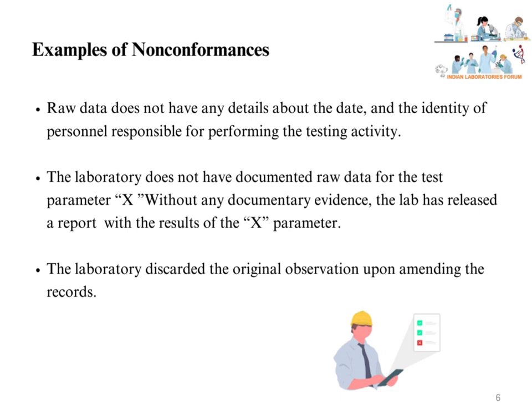Examples of non-conformances as per Clause 7.5: Raw data does not have any details about the date and identity of personnel responsible for performing the testing activity. The laboratory does not have documented raw data for test parameter X without any documentary evidence, yet the lab has released a report with the results of the X parameter. The laboratory discarded the original observation upon amending the records.